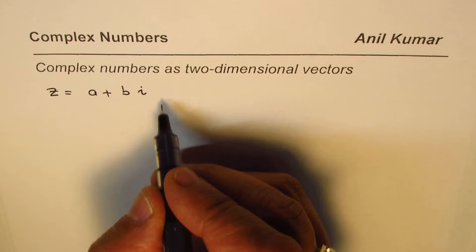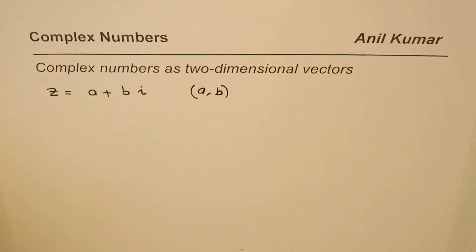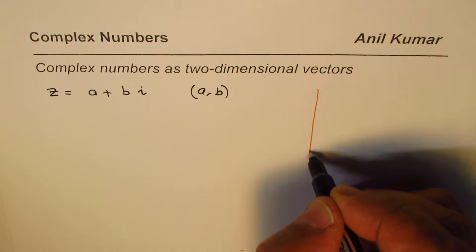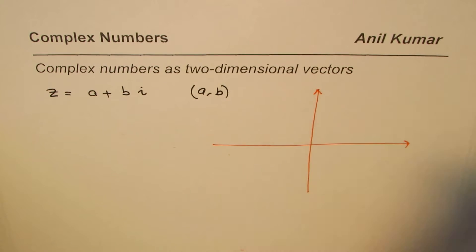You could also represent this number in another way: a comma b, like a coordinate. If we are representing it on a plane where one of the axes is real, the other one is imaginary.